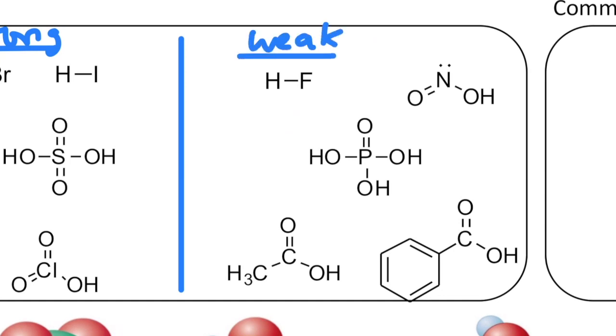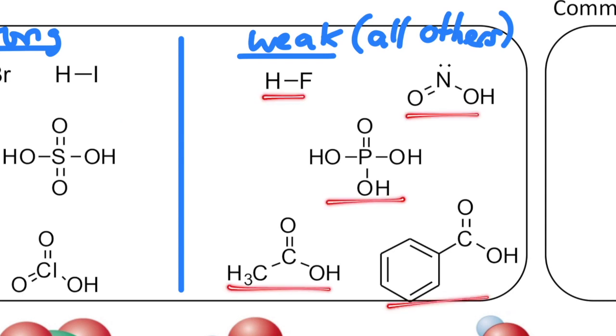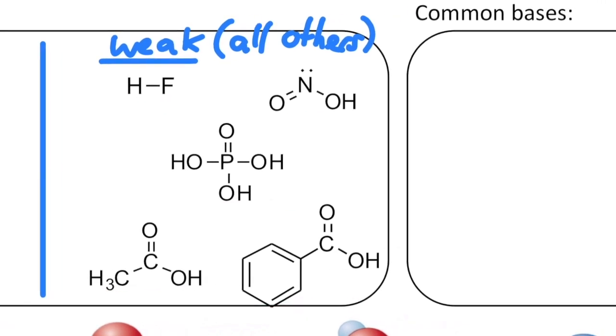So a weak acid is all the others, and these are just a few examples in this section. Hydrofluoric acid, nitrous, phosphoric, acetic, and benzoic acid are all examples of weak acids because they are not strong. What about the bases?